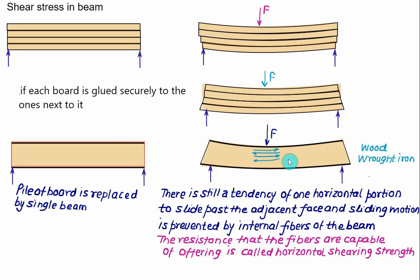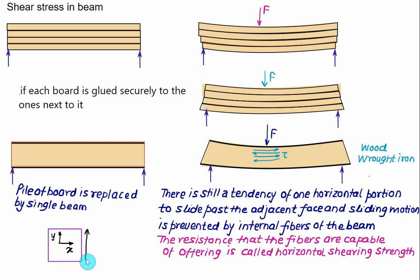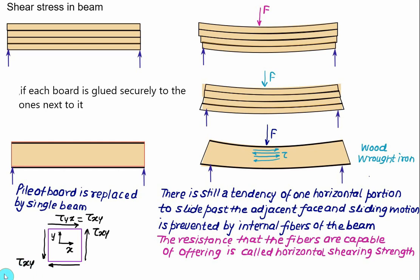We want to discuss the relation of bending with horizontal shear and how to calculate the shear stress. Bending stress is maximum on the top and bottom fibers — compressive on top and tensile at the bottom — while at the neutral axis the bending stress is zero. Shear stress is parallel to the plane and represented as tau_xy, while shear stress on the perpendicular plane is tau_yx. Mathematically, tau_yx equals tau_xy.